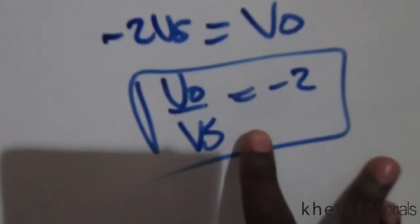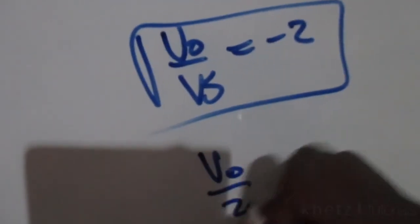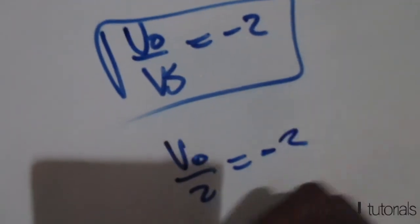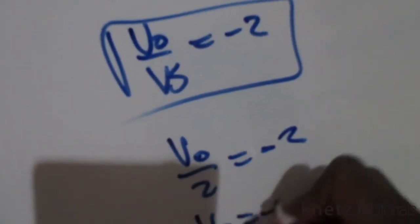But previously we said that Vs is given to us as 2, so Vo divided by 2 is equal to negative 2, and therefore Vo is equal to negative 4.